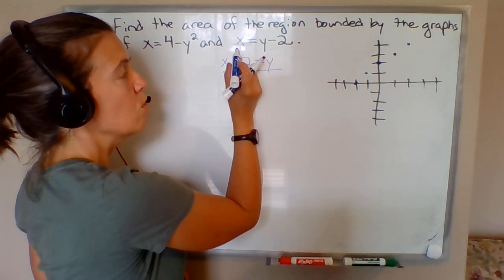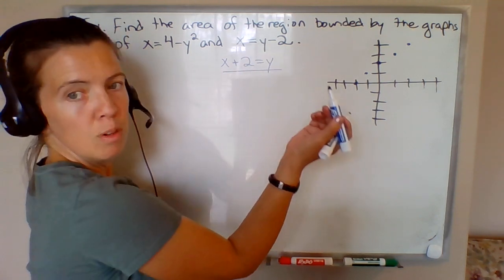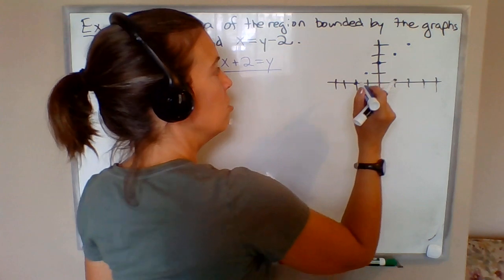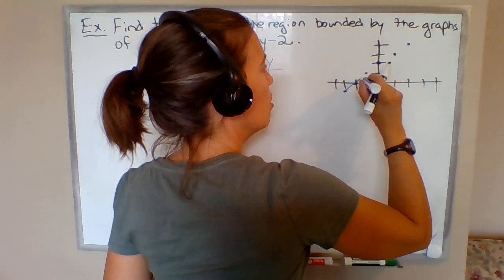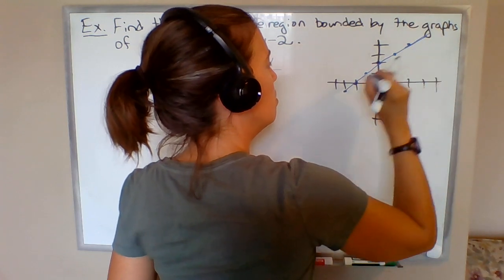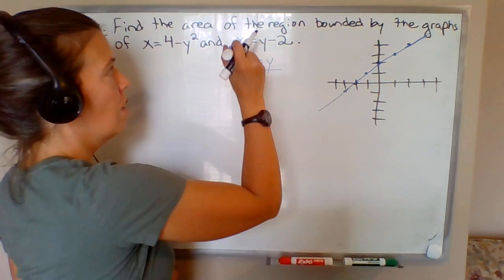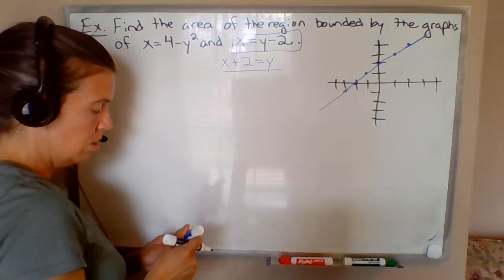So I have it hitting the x-axis at negative 2, which you could verify real quick. If x is negative 2, y would be 0, that would satisfy that equation. Maybe I'll do one more point here, and then I'm going to draw the line. So there's the line corresponding to this equation here.